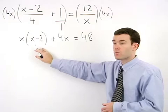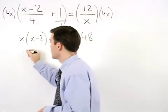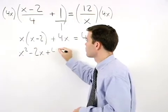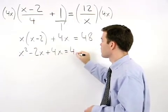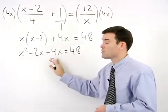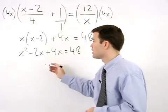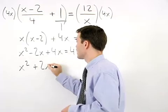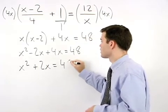Distributing through the parentheses we have x squared minus 2x plus 4x equals 48. And simplifying further on the left side we have x squared plus 2x equals 48.